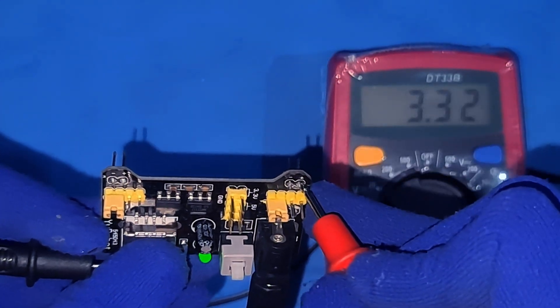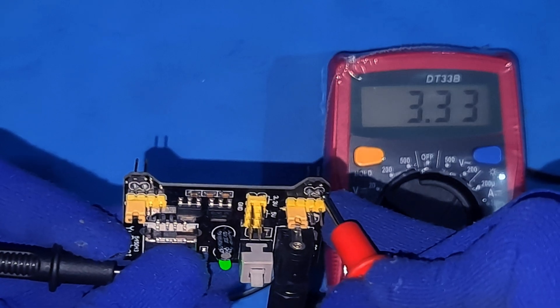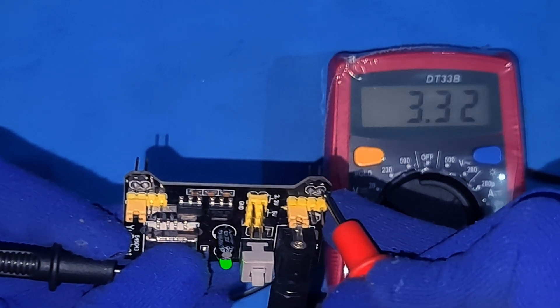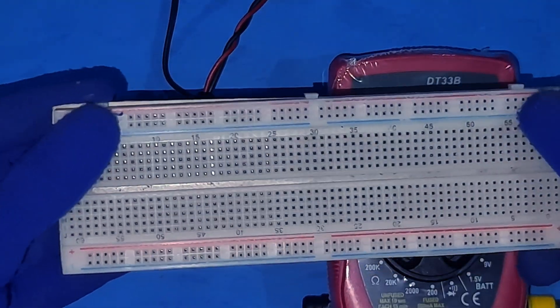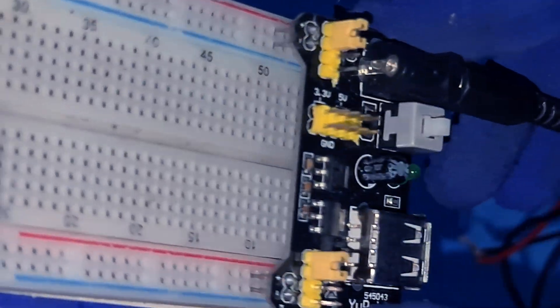Which you can toggle between 3.3 volts and 5 volts using these jumpers. With an output current of up to 700 milliamps per channel, it's more than enough for most low-power digital circuits. It's designed to mount directly onto a breadboard, making it a go-to for powering DIY circuits.